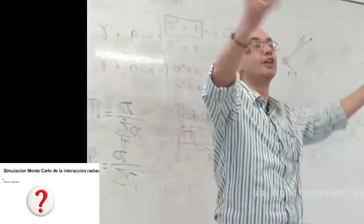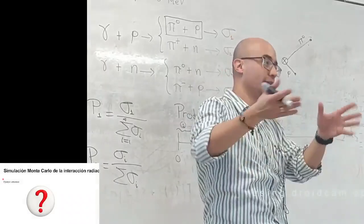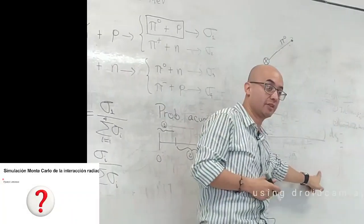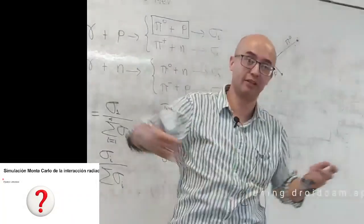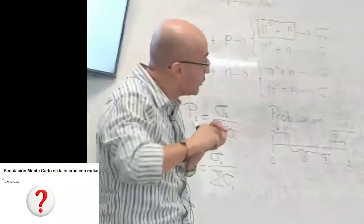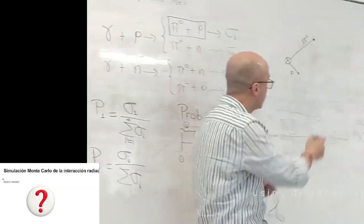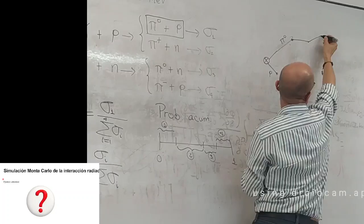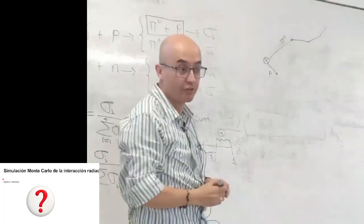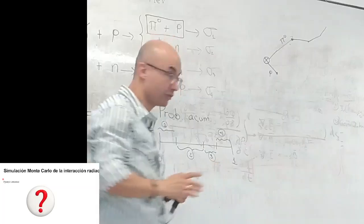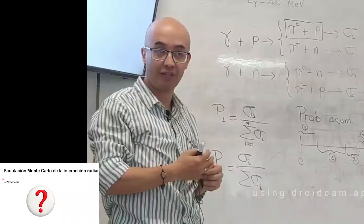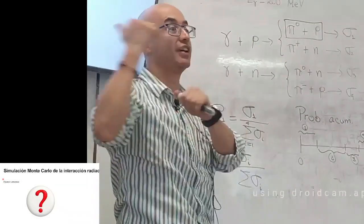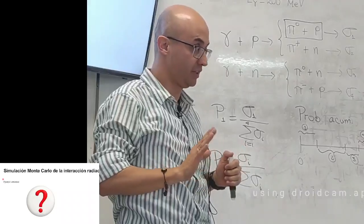Particles are propagated step by step through the material. At each collision point, new cross-sections are looked up, new cumulative probabilities formed, new random numbers generated, and new secondary particles tracked. This recursive tracking of all particles — primaries and secondaries — is essentially what powerful Monte Carlo transport codes implement at a professional level.